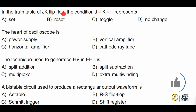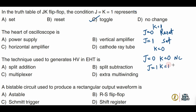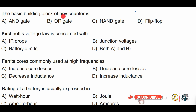Next: in the truth table of the JK flip-flop, the condition J = K = 1 represents the toggle state. For reference: J = 0, K = 1 is reset; J = 1, K = 0 is set; J = 0, K = 0 gives no change; and J = 1, K = 1 gives toggle output. Finally, the basic building block of any counter is the flip-flop — option D.